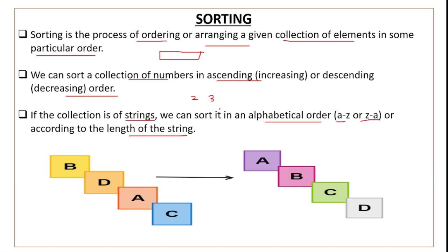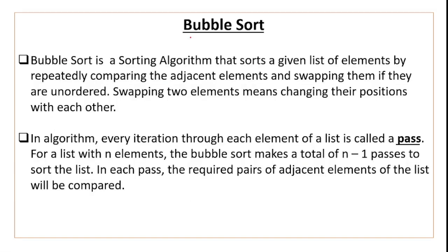Sorting means arranging a collection of elements. The first sorting algorithm we have is bubble sort. Bubble sort is a sorting algorithm that sorts a given list of elements by repeatedly comparing adjacent elements and swapping them if they are out of order.